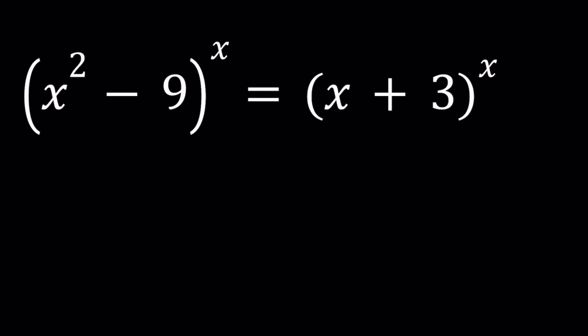So we have x squared minus 9 to the power x equals x plus 3 to the power x. And we're going to be solving for x values. So, let's get started.